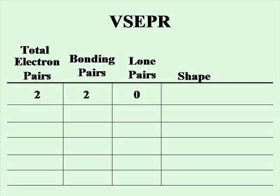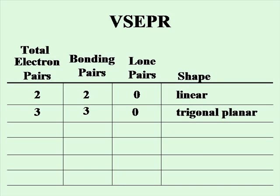If you have only two total electron pairs and both of them are bonding with no lone pairs, the geometry of your molecule will be linear. If you have three total electron pairs and all three of them are bonded with no lone pairs, you will have a trigonal planar geometry. If you have three total electron pairs, two of them are bonded, and one of them is a lone pair, then you will have a bent geometry.